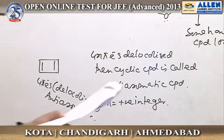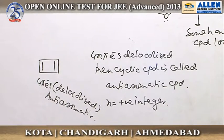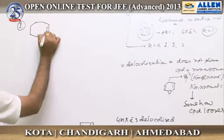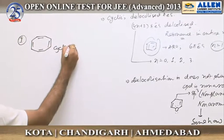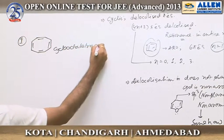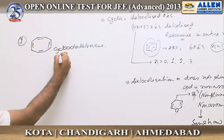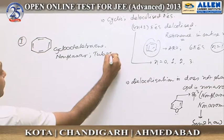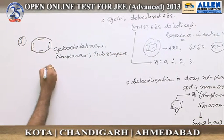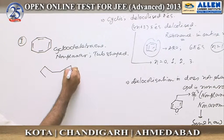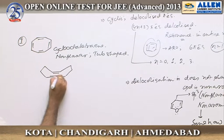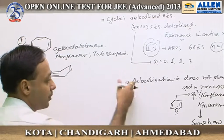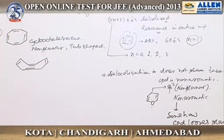Now we have several compounds to analyze. The first compound is cyclooctatetraene (COT). This compound is actually non-planar — it is a tub-shaped molecule. Because it is non-planar, the second requirement for aromaticity is not satisfied, and it is non-aromatic.